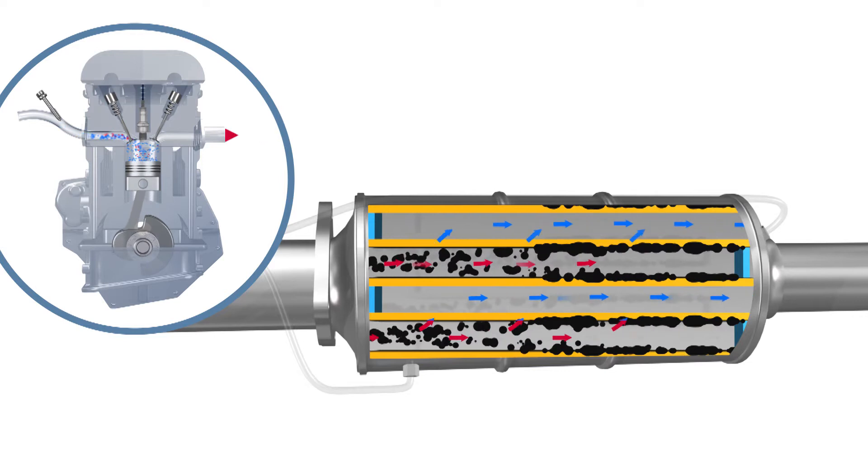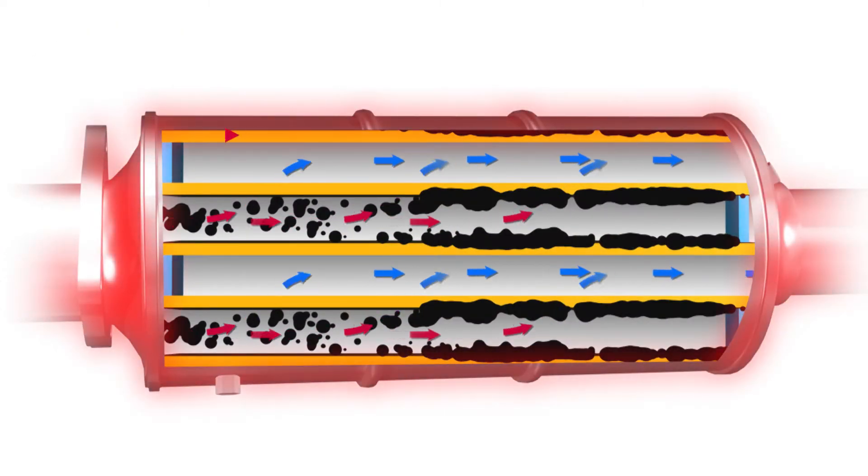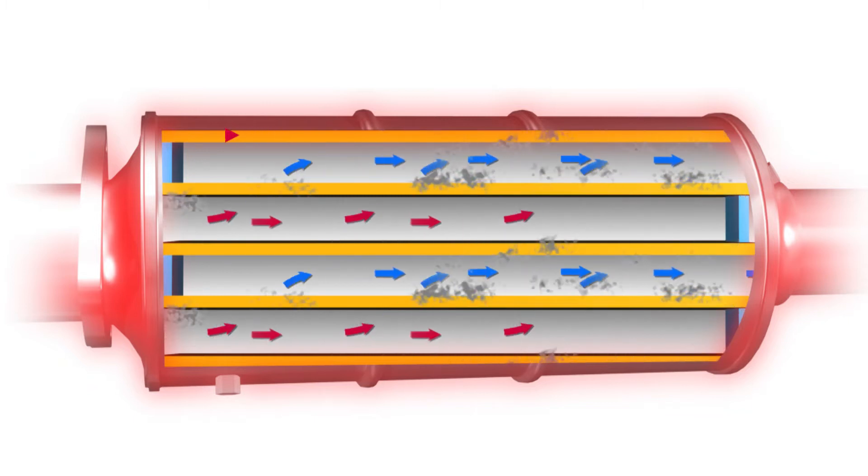The soot particles accumulate in the channels of the DPF and are burned off at regular intervals through a process called regeneration. This prevents the DPF from clogging.